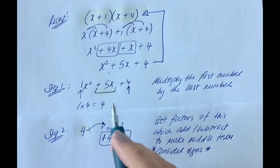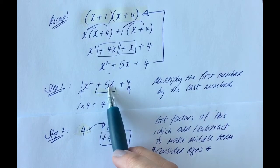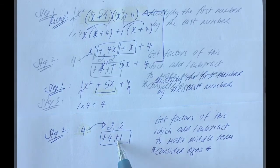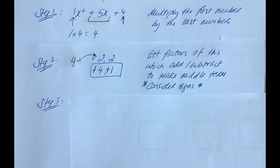So make sure you put your signs in there. To make the plus 5, it's easy enough in this one. They all have to be positive.